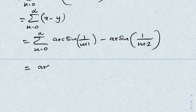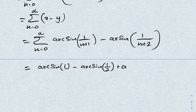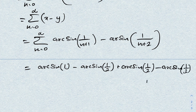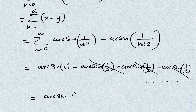This is a telescoping series. Plugging in n=0: arcsin(1) - arcsin(1/2). Plugging in n=1: arcsin(1/2) - arcsin(1/3), and so on. All intermediate terms cancel, leaving just arcsin(1), which equals π/2. So the answer is π/2. If you like this type of video, please subscribe to the channel. Thank you for watching!